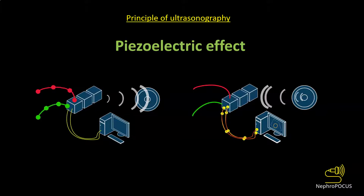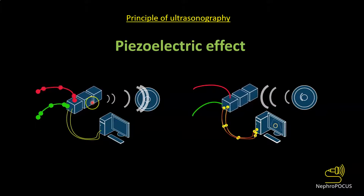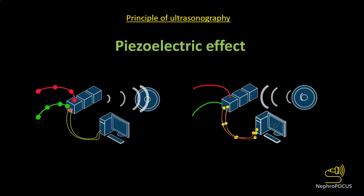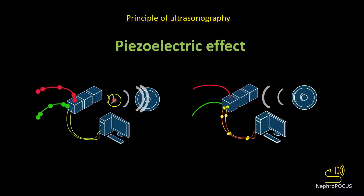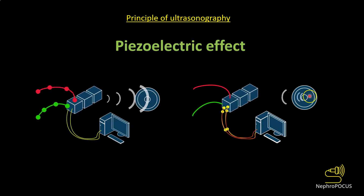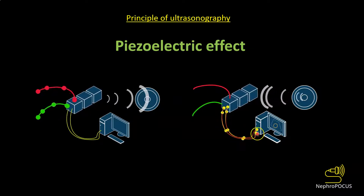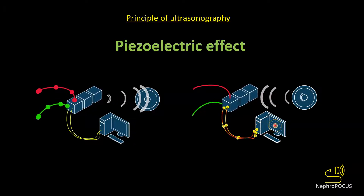The reverse piezoelectric effect is illustrated here. These are the piezoelectric crystals present in the ultrasound transducer. When stimulated by electrical impulses, they vibrate and produce ultrasound waves that hit the target organ. When the target organ makes echoes, those reflected sound waves stimulate the crystals again, generating electrical impulses which are processed by the ultrasound machine and displayed as an image on the monitor.